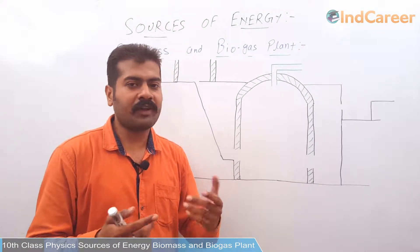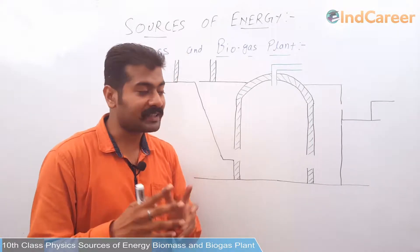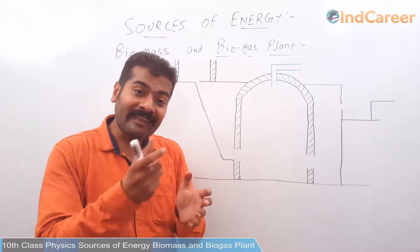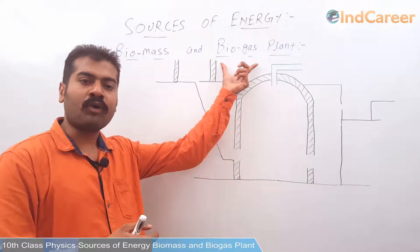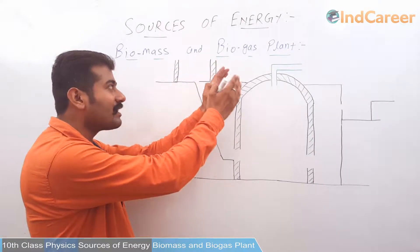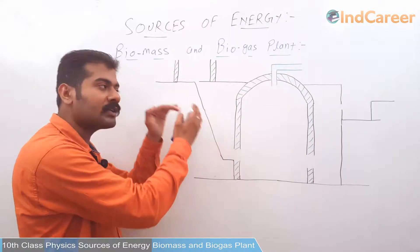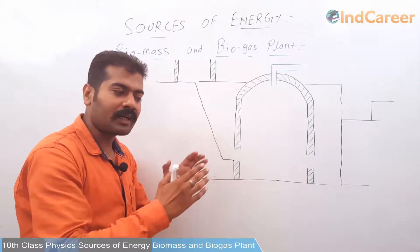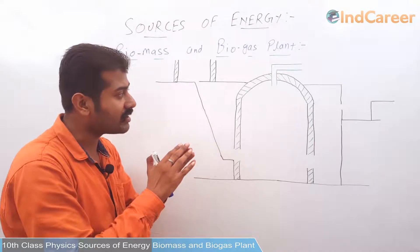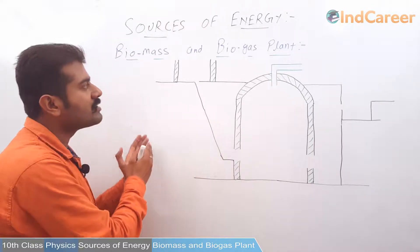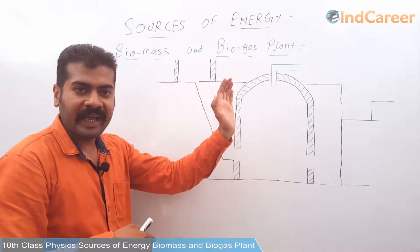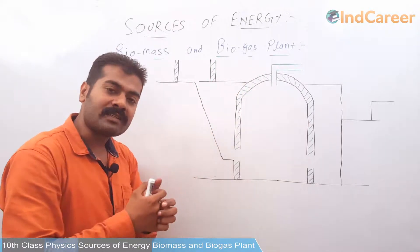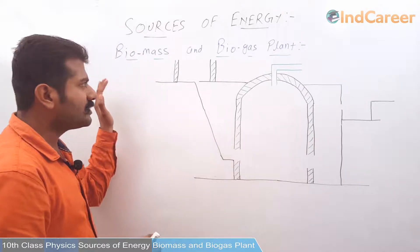Instead of waiting for millions of years, can we use that waste immediately? Two problems will be solved: first, the waste material can be utilized, and second, we can use that thing as a fuel. That thing is what we call biogas. Biogas is a result of, or we can say a product of, biomass. If the biomass decomposes under certain conditions and in certain atmospheres, it results into biogas, and we can use that biogas as a fuel.